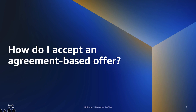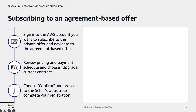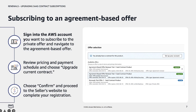How do I accept an agreement-based offer? First, the customer will sign into the AWS account they'll want to use to subscribe to the private offer and navigate to the agreement-based offer. This can be done by either clicking on the private offer URL provided to them by the seller or navigating to the product in AWS Marketplace. Then, the buyer will choose the private offer from the list of available offers and then click Upgrade.